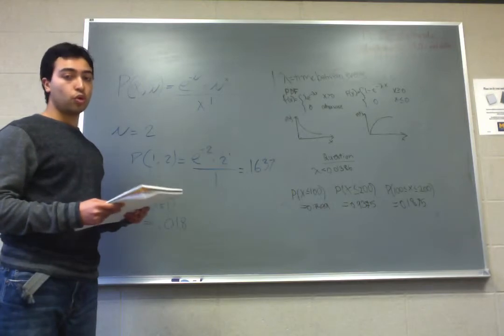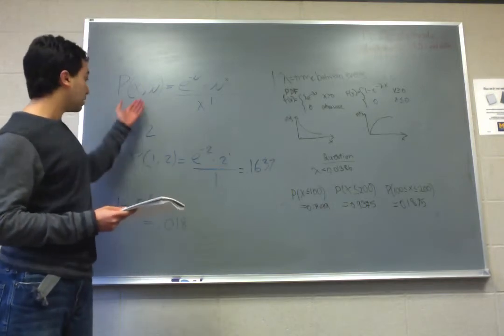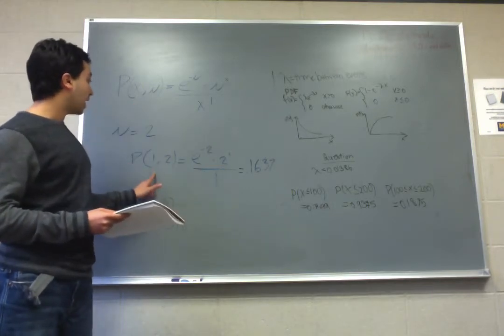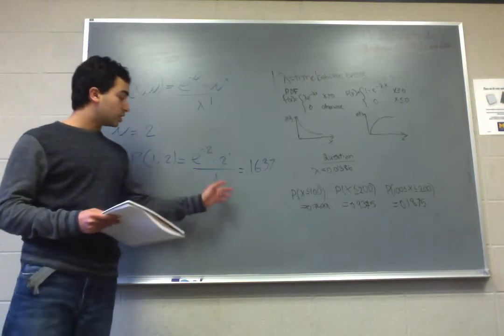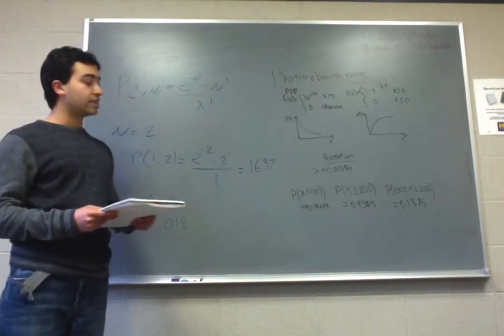The probability that the disk has one missing pulse - you can plug it in right here. The probability of x equals 1 with mu of 0.2, you solve it out and get 0.1637.